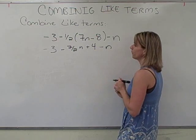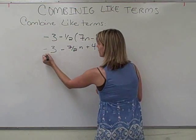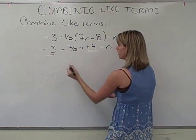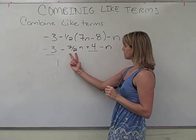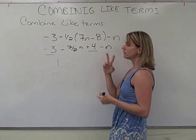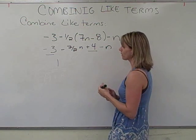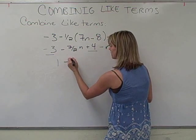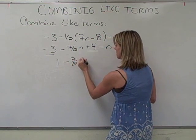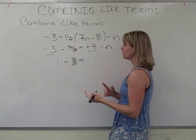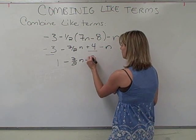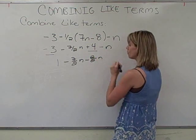Now we see that we have four terms that we need to combine together. We can put the negative 3 with the 4, that's going to give us 1. But when we combine the negative 7 halves N and the minus N, again we need to do some fraction work. So we'll do negative 7 halves N. The coefficient in front of this N is just 1. So to give it a denominator of 2, I just write 2 over 2, which is just 1.